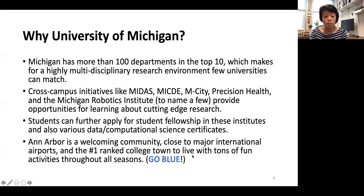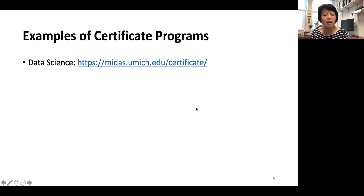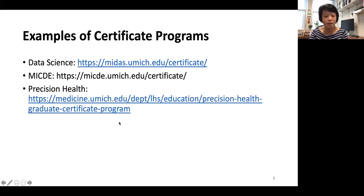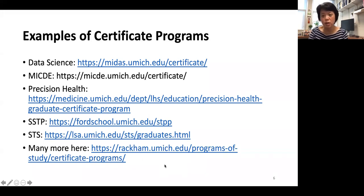Ann Arbor is also a very welcoming community. We're close to a major international airport and it's ranked the number one college town to live in, with tons of fun activities throughout the seasons — kayaking in the summer and skating and winter sports in the winter. Examples of certificates include those from Data Science, the Computational Discovery Engineering Institute, Precision Health, STDP, and STS, with many more listed on the RECOM website. In addition to your degree — either master or PhD — you can also earn certificates in certain concentration areas.